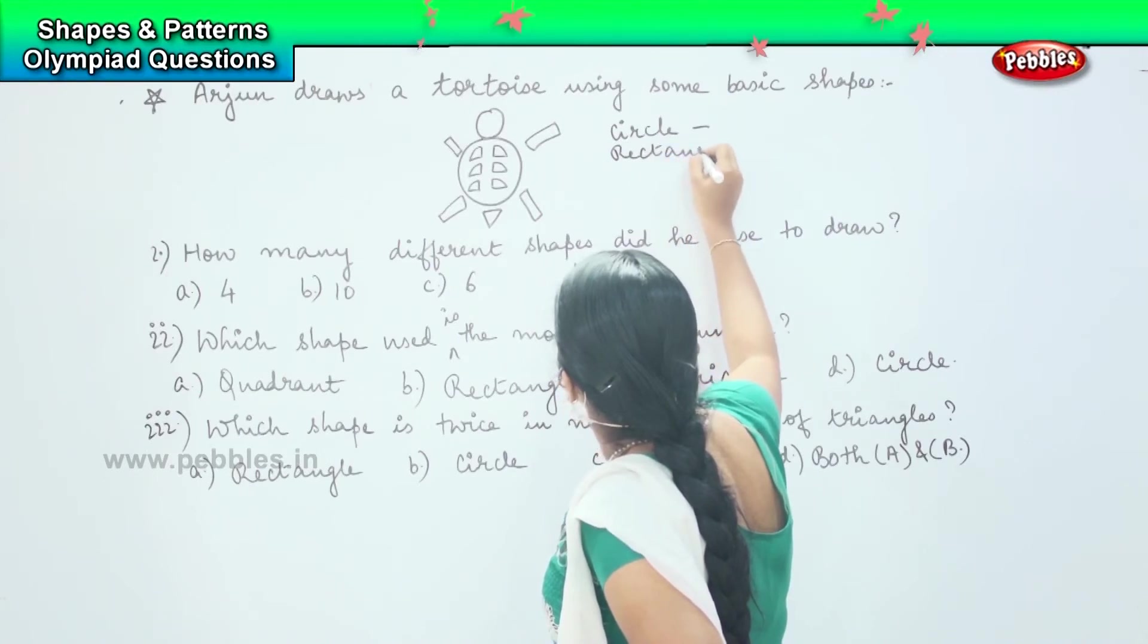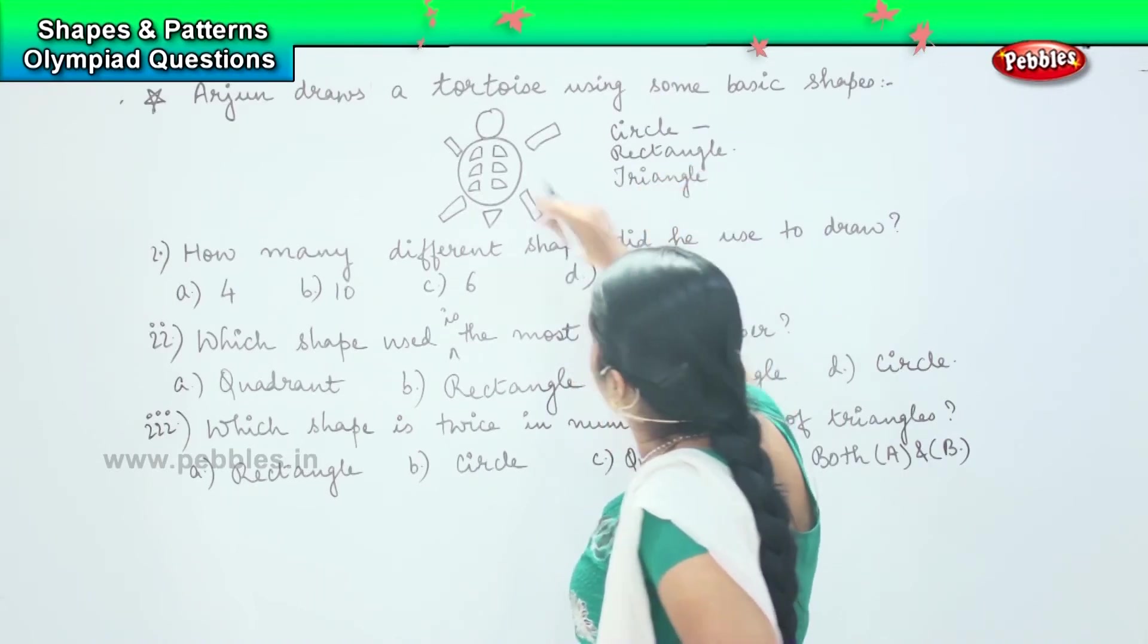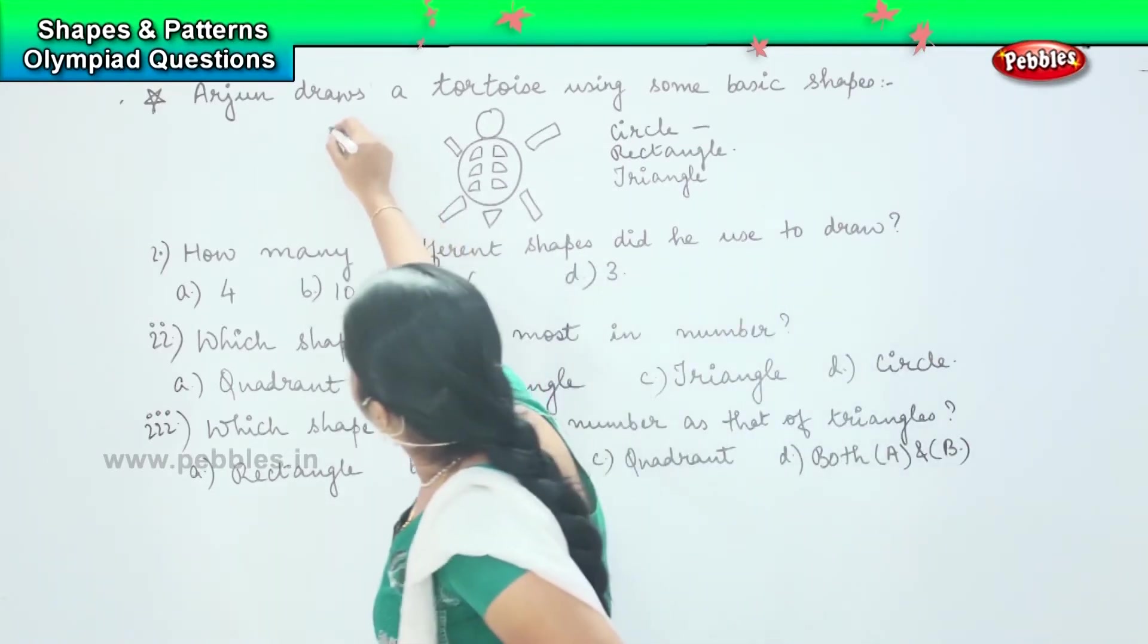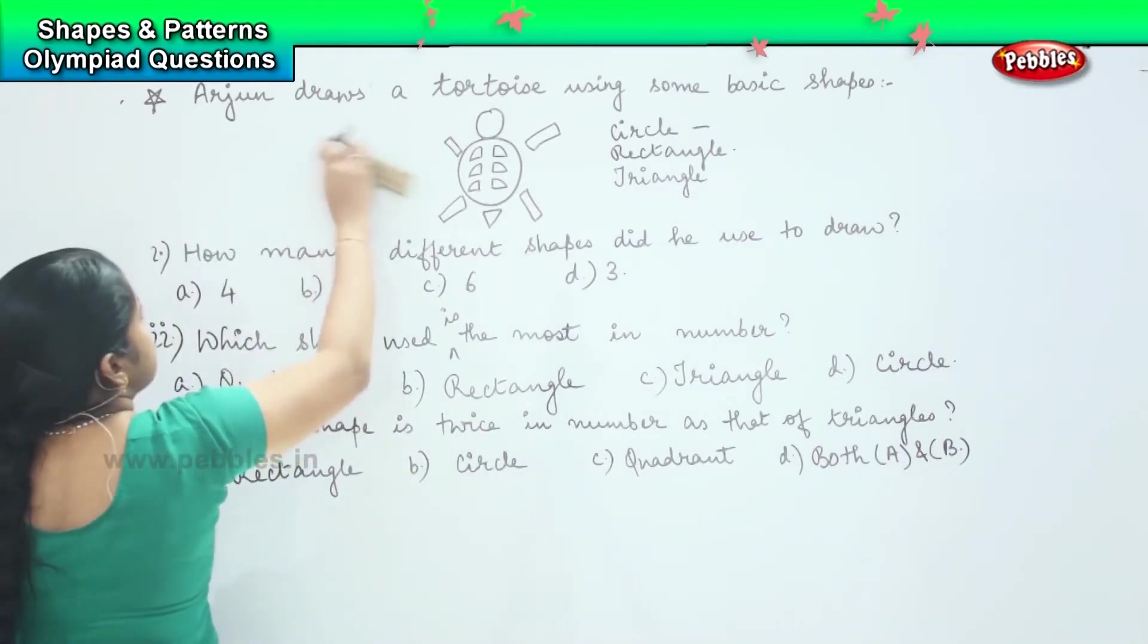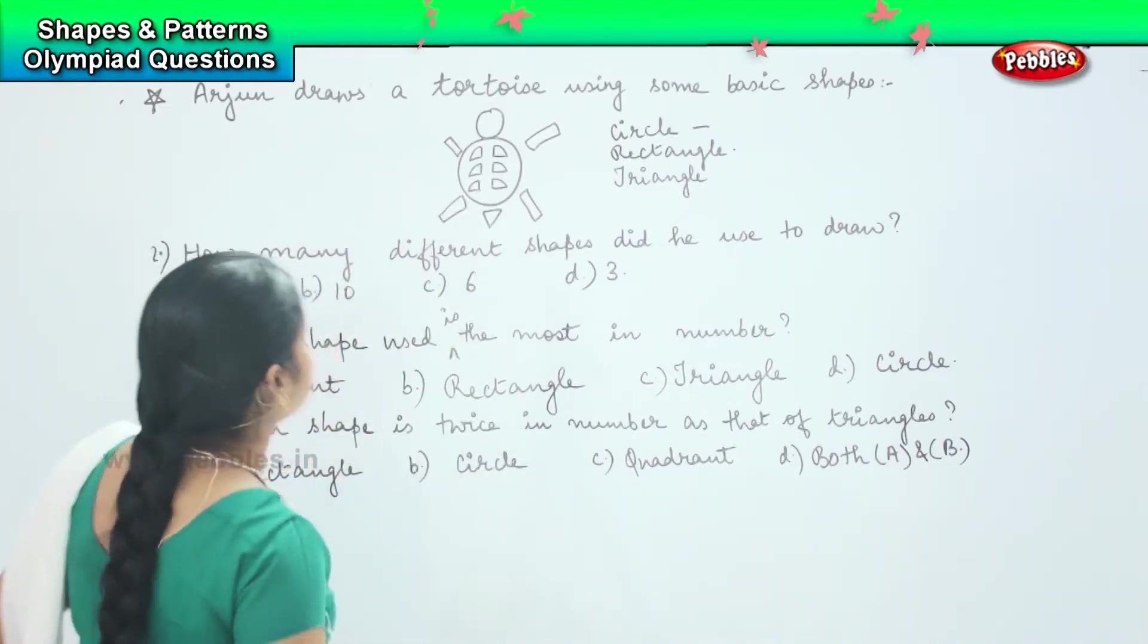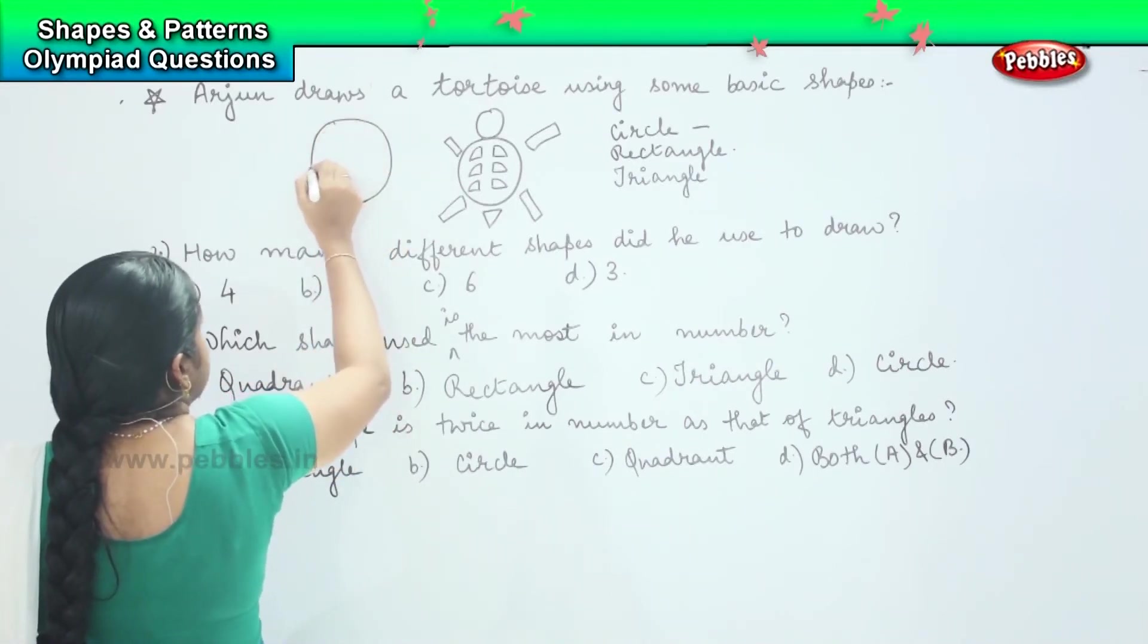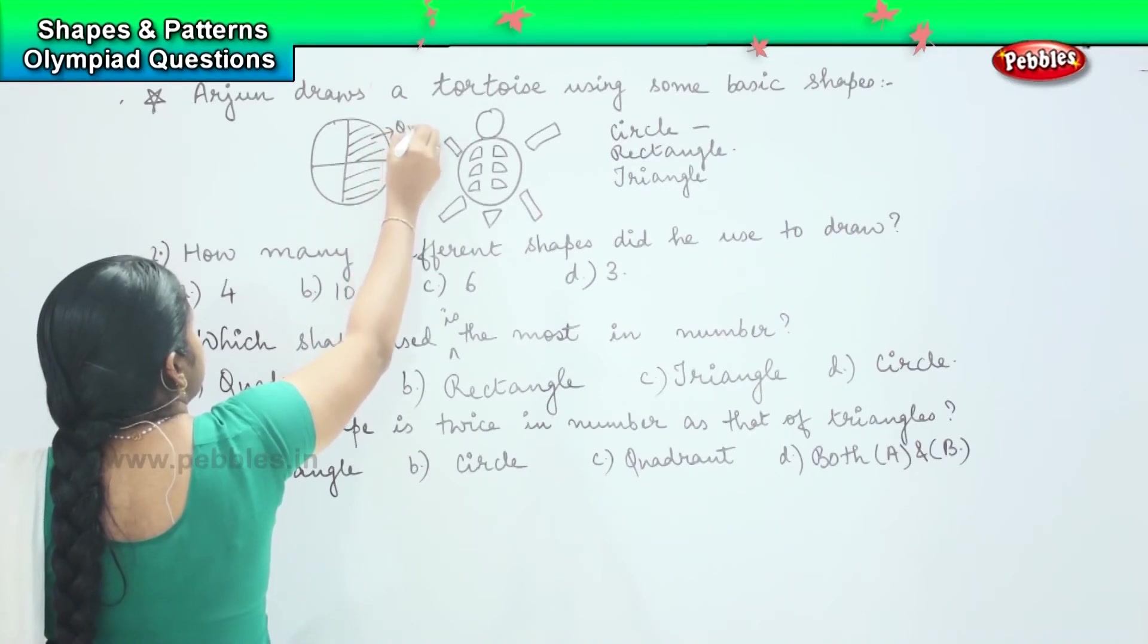then he had used a triangle, and children, this is called as quadrant. That is, if you draw a circle and then divide it equally in four parts, so each side is called as a quadrant. This is called as quadrant.